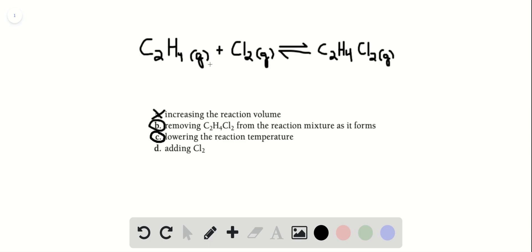So as you add more product, you're shifting the reaction away from the side that's now more full, and so you would generate more C2H4Cl2. So D would also maximize the amount of C2H4Cl2 produced. So B, C, and D are the answers for this question. Thank you.